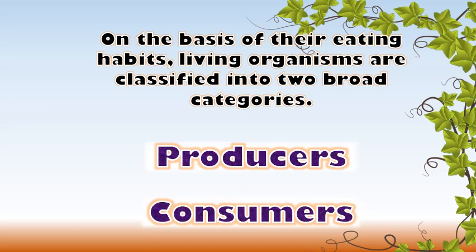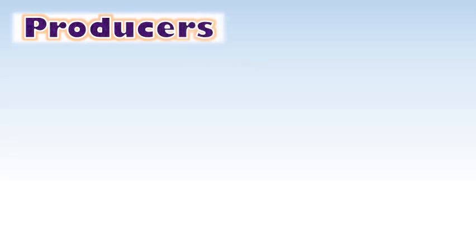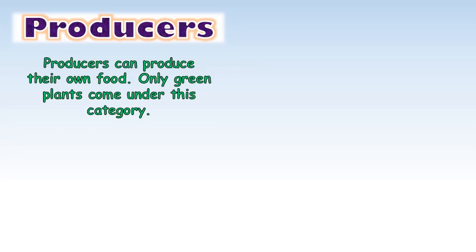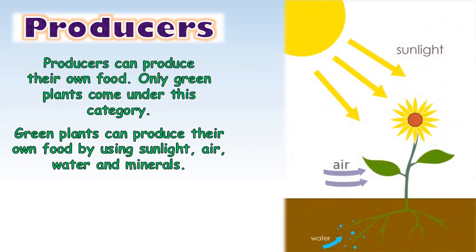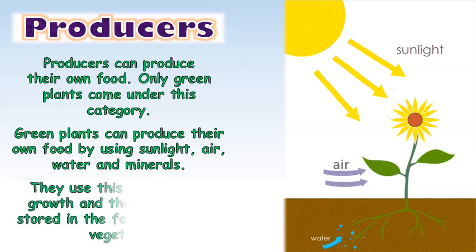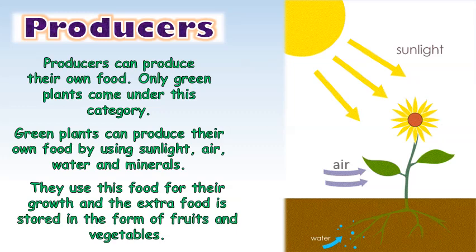Producers can produce their own food. Only green plants come under this category. Green plants can produce their own food by using sunlight, air, water, and minerals. They use this food for their growth, and the extra food is stored in the form of fruits and vegetables.